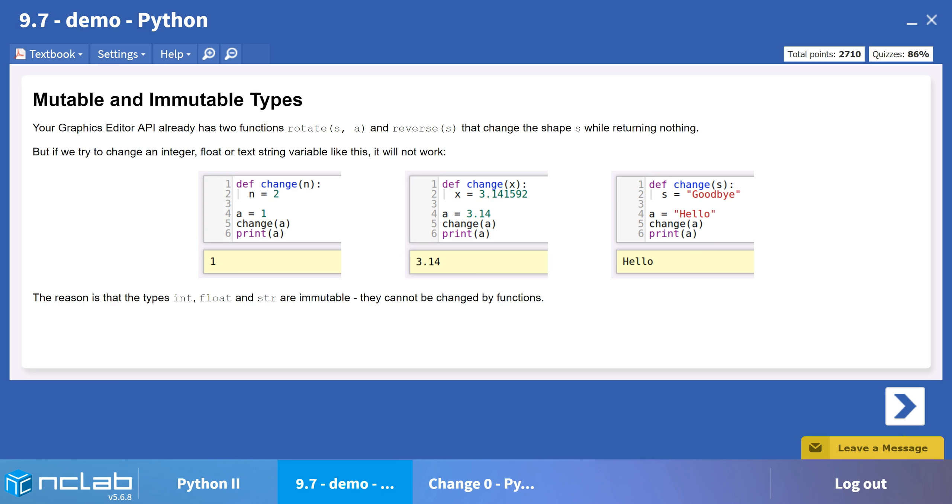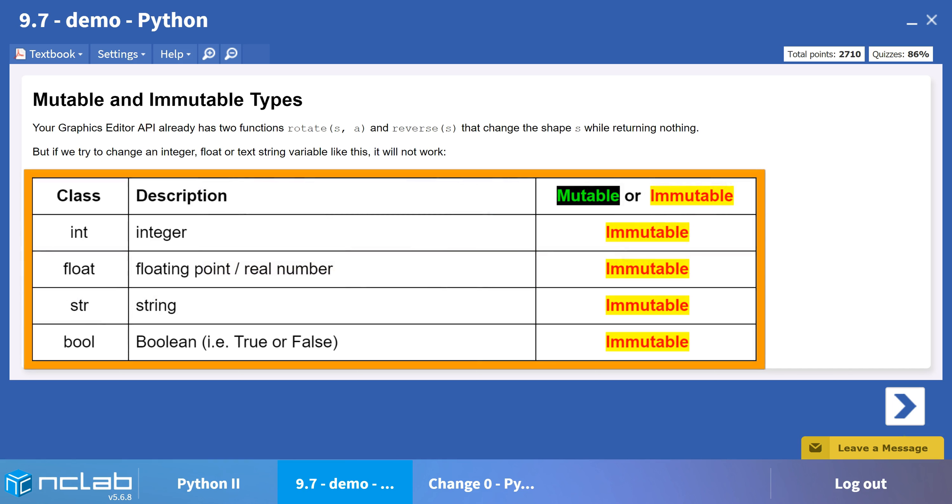Immutable objects cannot be changed by a function. The data types we have been using, string, integer, float, and boolean, are all immutable.